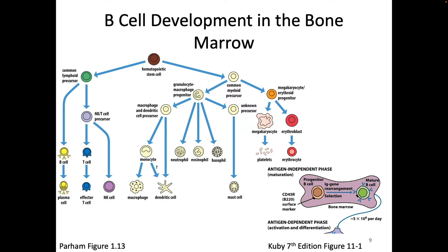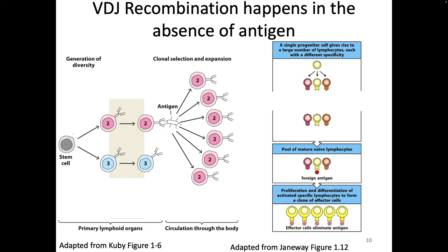This phase in the bone marrow is listed as the antigen-independent phase. We're not really thinking about what antigen that B cell responds to yet — the B cell is going to see antigen and do something when it leaves the bone marrow. The B cell is doing all of this randomly and not in response to antigen, diversifying and making lots of different types of receptors. Only later are we going to actually respond to antigen and expand.